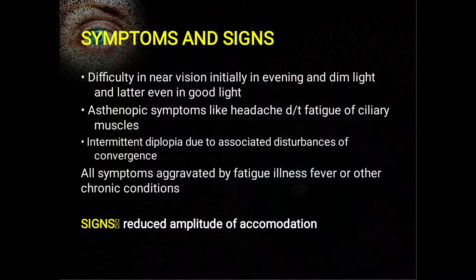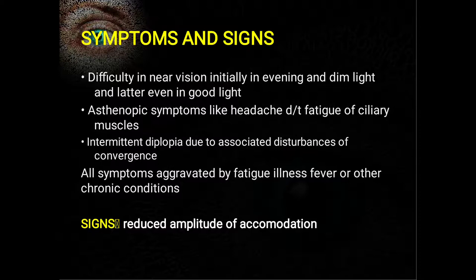There may be intermittent diplopia because of associated disturbance of convergence. As you know, when we read or focus at near objects our eyes also converge, so there may be disturbance in convergence leading to diplopia. All these symptoms are aggravated by long hours of working, fatigue, illness, fever, and other chronic conditions.